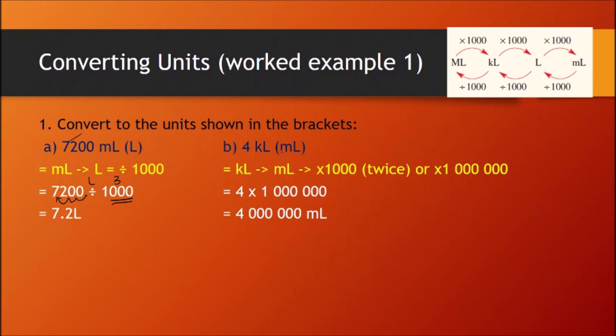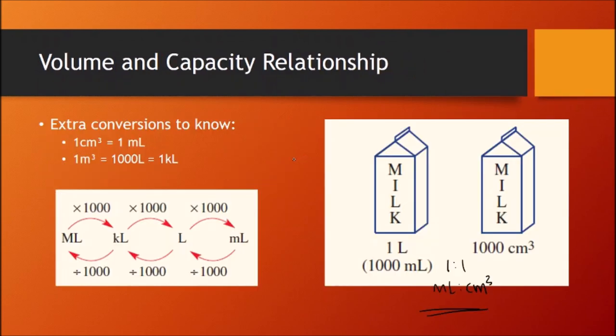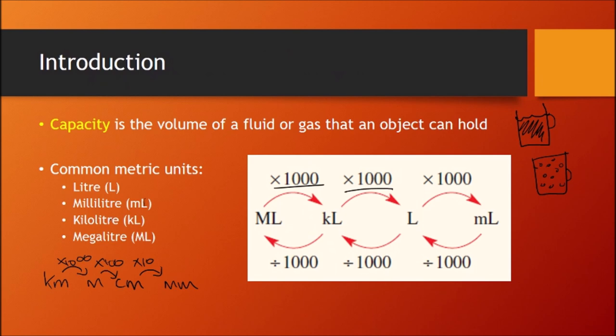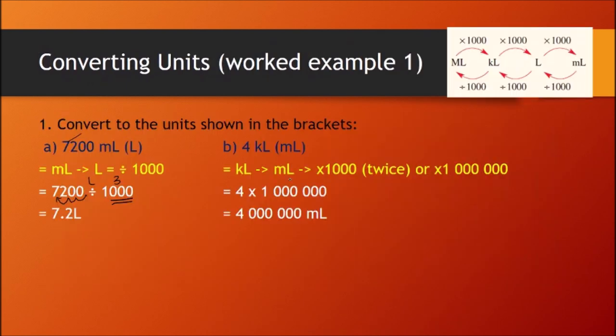Okay. So here we've got four kilolitres. Alright. So just showing you kilolitres. Alright. So four kilolitres to millilitres, you can times a thousand twice on your calculator. Or what you could do is if you look kilolitres to millilitres, there's a bit of a gap. Alright. It's not just next door. So you have to times a thousand twice.